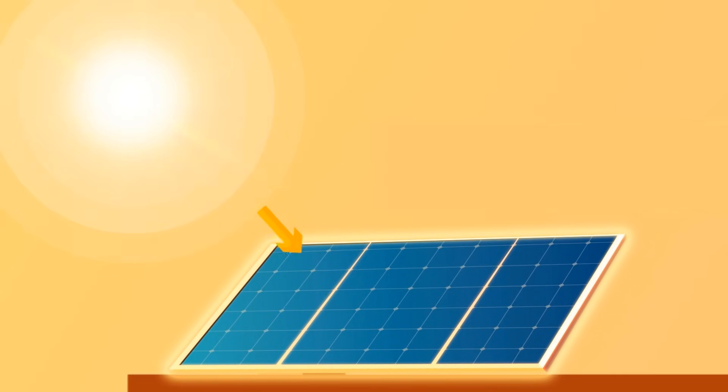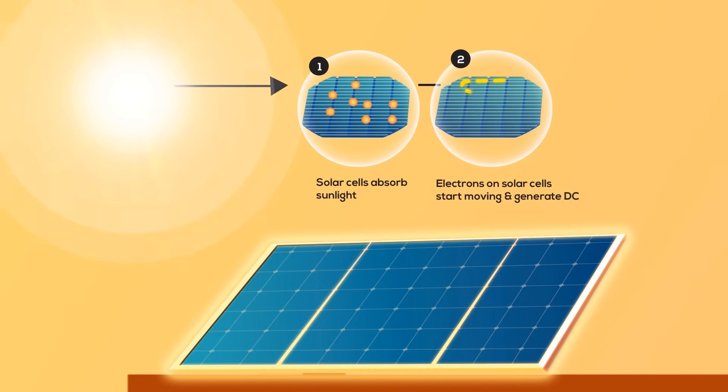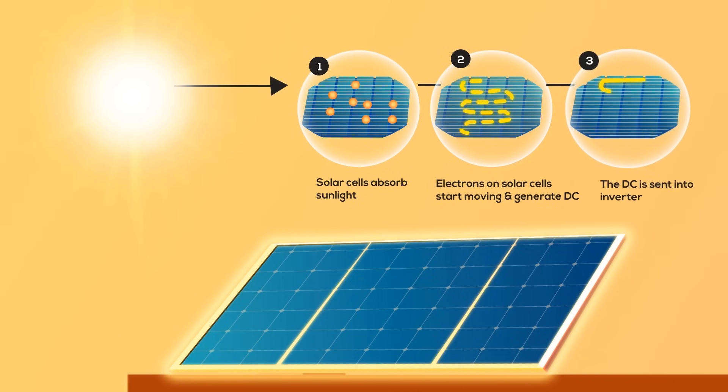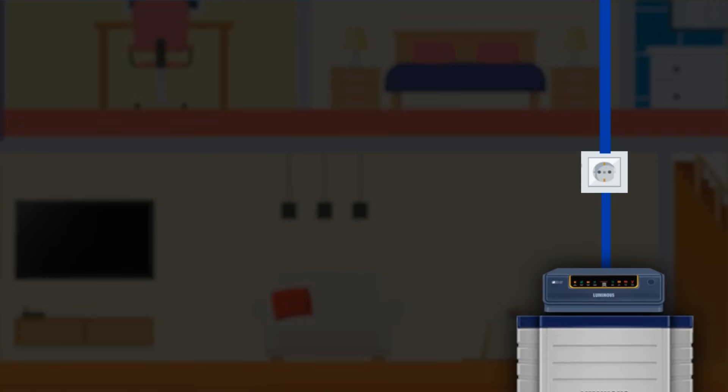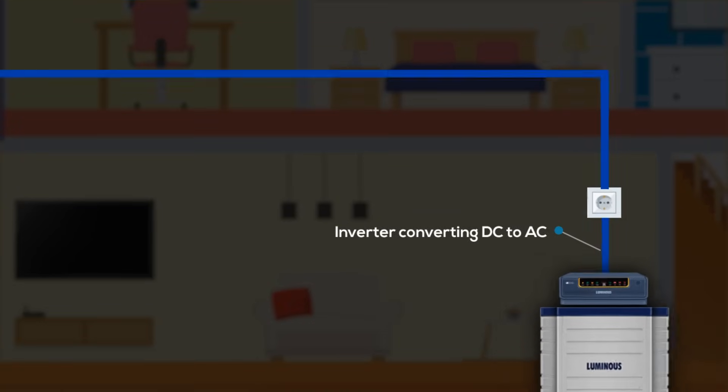During the day, when the sun shines on the solar panels installed in your home, electrons within the solar cells start to move around, which produces DC energy. The energy then goes straight into an inverter, which converts it into AC energy—the standard electrical current used to power appliances.